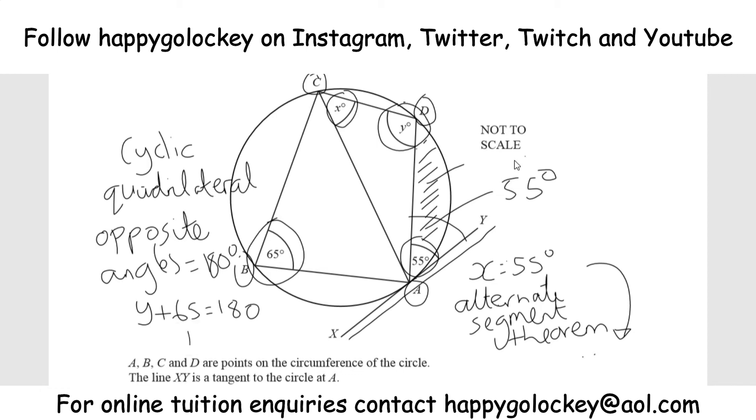So all we've got to do is 180 take away 65. That would be 115 degrees. So Y is 115 degrees for your third mark, and the reason quoted, you could just say cyclic quadrilateral or opposite angles of a cyclic quadrilateral, something like that.